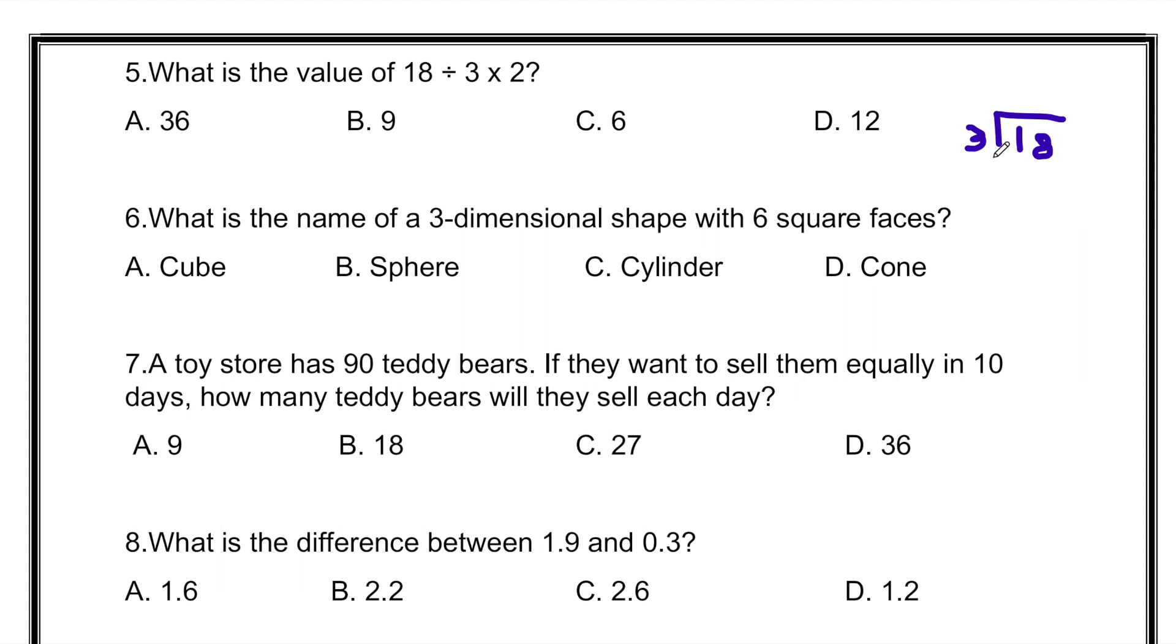So does 18 come in 3's table? 3 ones are 3, 3 twos are 6, 3 threes are 9, 3 fours are 12, 3 fives are 15, and 3 sixes are 18. So 18 divided by 3 equals 6. What is 6 times 2? 12. So the answer is 12.